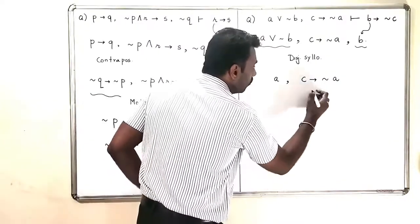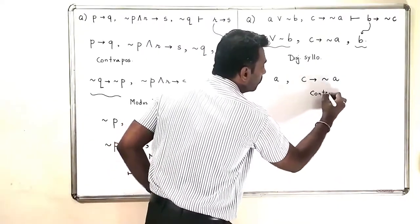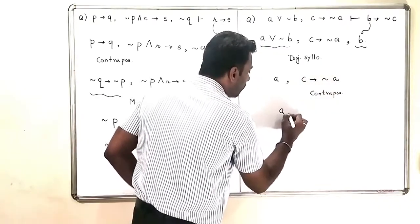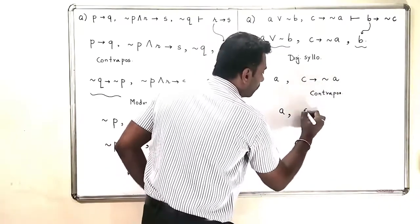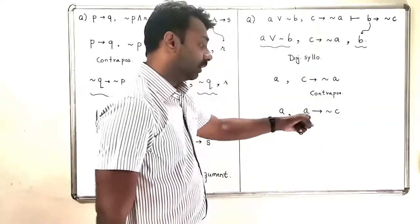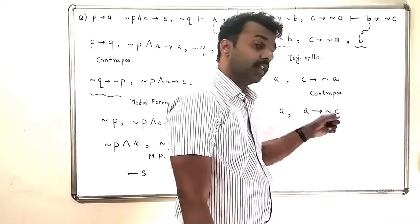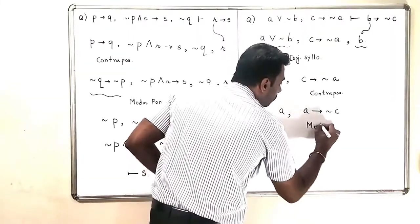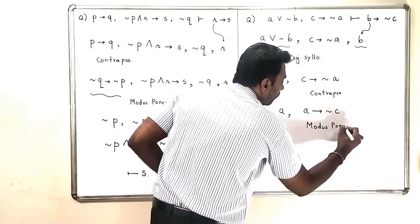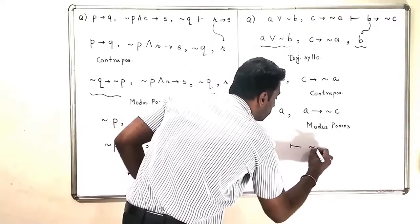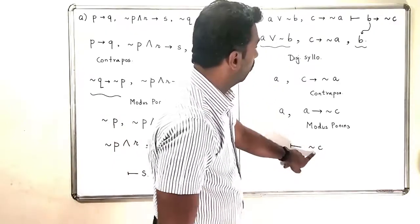And when I write the contrapositive of this, what is the contrapositive of this term? It is A. And the contrapositive is A implies negation C. And now, this looks like our modus ponens again. So, I am going to apply modus ponens. And therefore, I will get the thing as negation C.